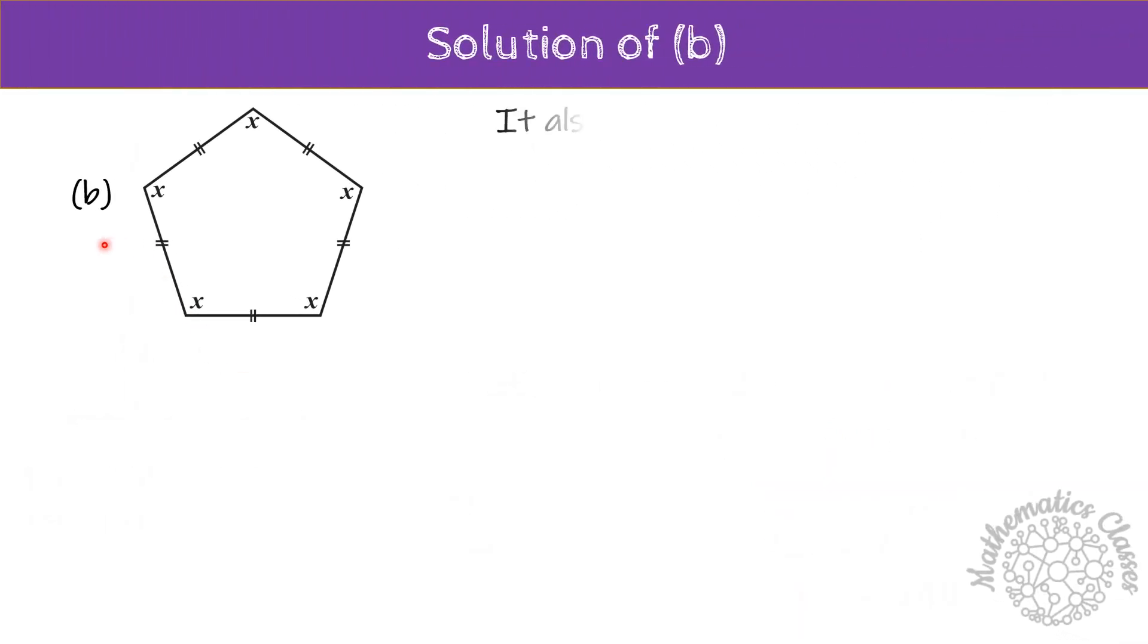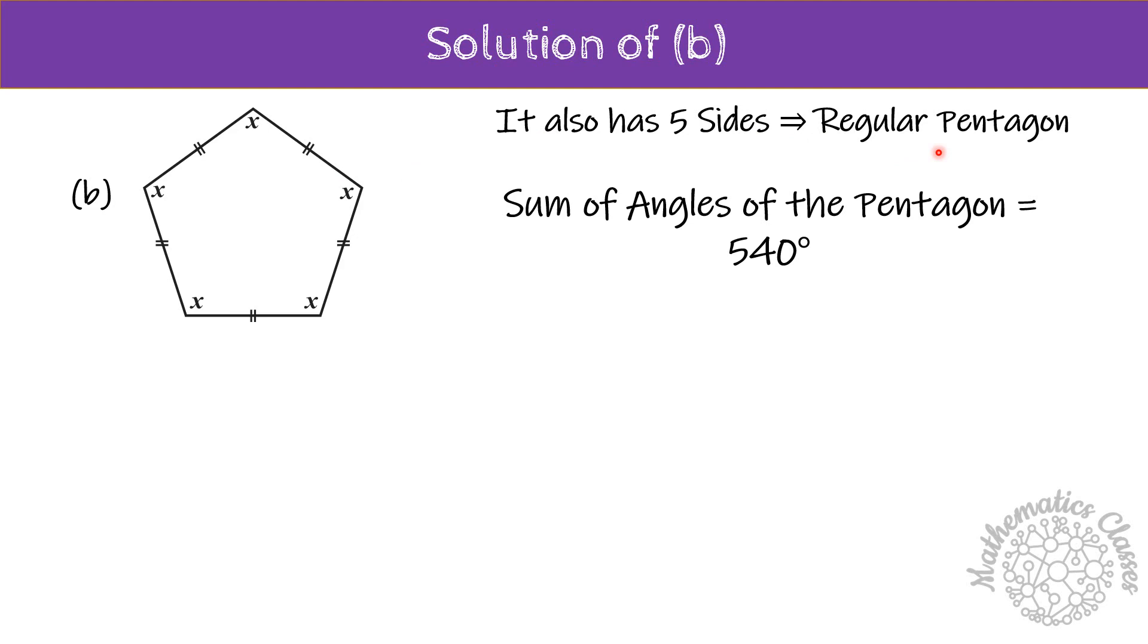In part b, we also have 5 sides and it is a regular pentagon. Regular pentagon means, in case all sides and angles are equal to one other. So, suppose if all the angles are equal to x, then adding 5 times x would be equal to 540. And, after solving it, here x will be 108 degree.